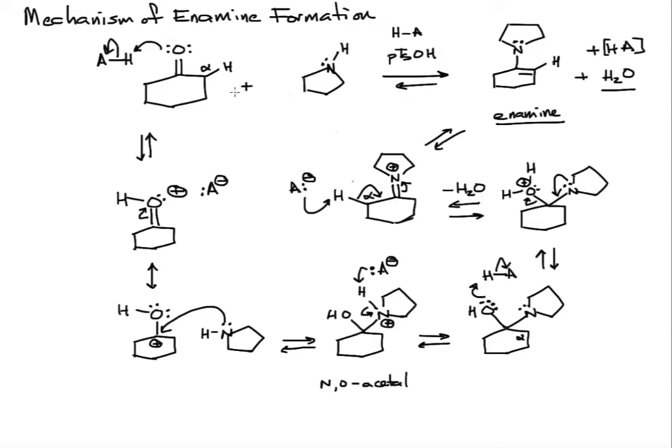This has been the mechanism of enamine formation, specifically showing a cyclic ketone, cyclohexanone, plus this secondary amine.